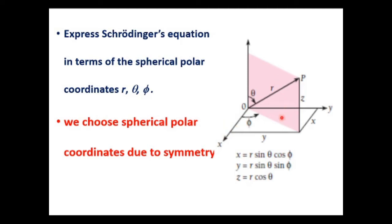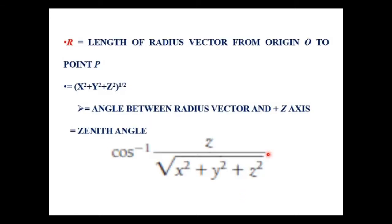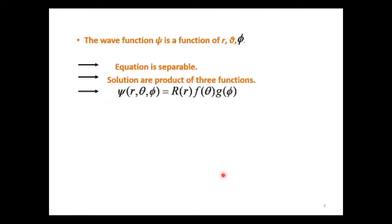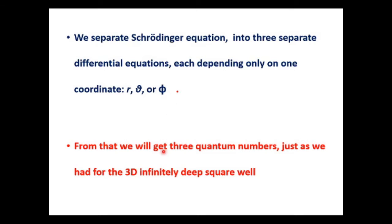We can perform a transformation between the Cartesian coordinates and the spherical polar coordinates. The relation between the Cartesian coordinates and the distance r is: r equals root of x squared plus y squared plus z squared. The polar angle, or zenith angle, is equal to cos inverse of z by r. Since the three coordinates r, theta, and phi are independent of each other, the wave function can also be split into three parts: a function of r, a function of theta, and a function of phi.